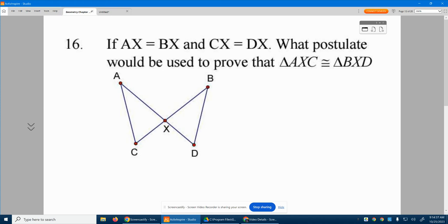All right, so it starts off saying AX is equal to BX. So here's AX, it matches the length of BX. It then says CX, this line segment right here, is the same length as DX.